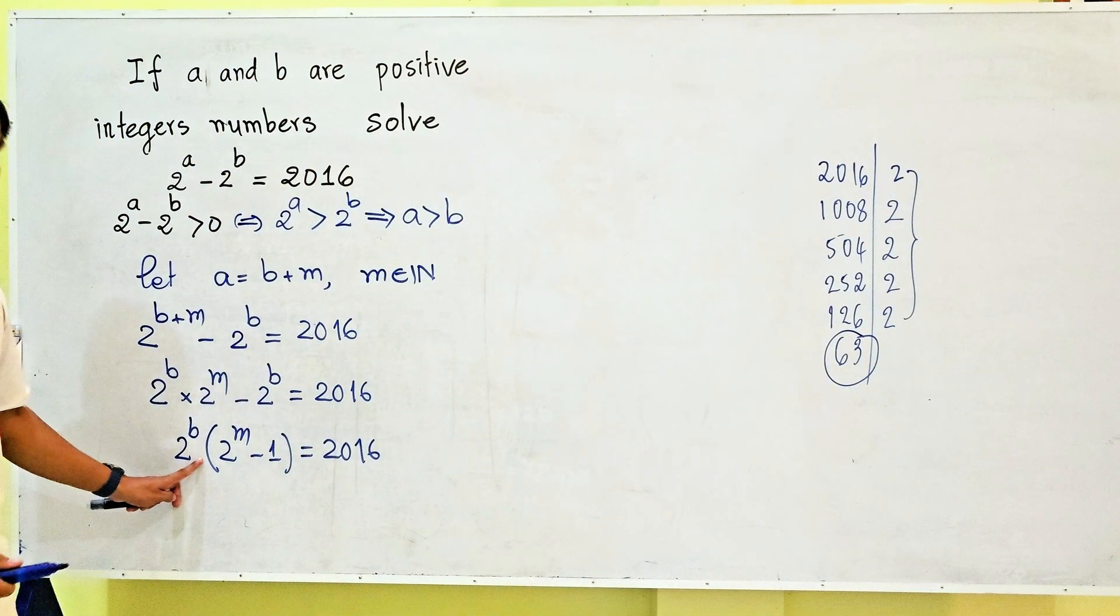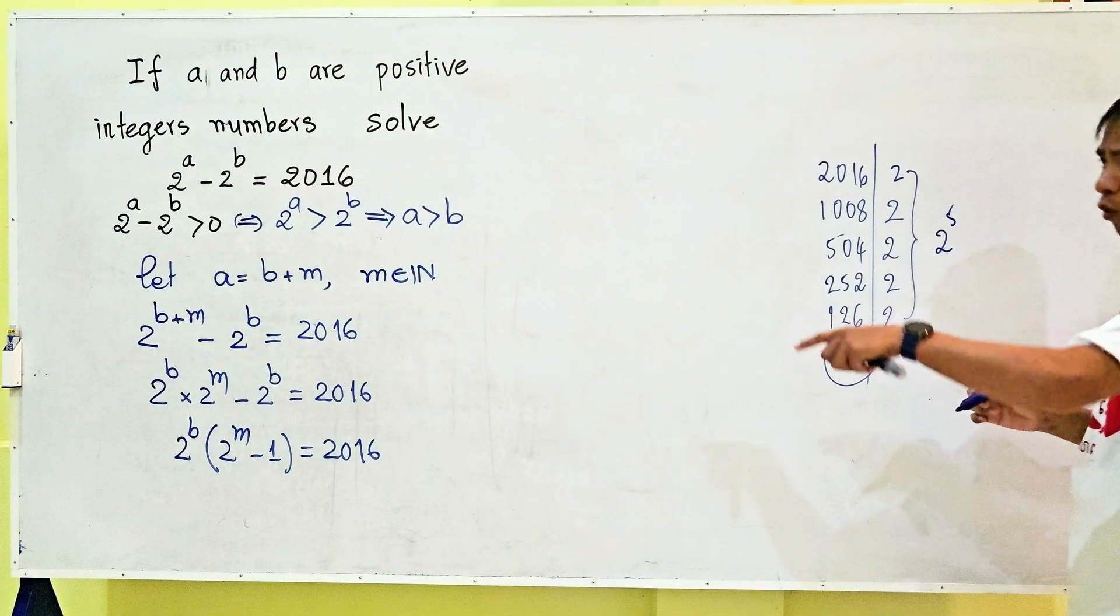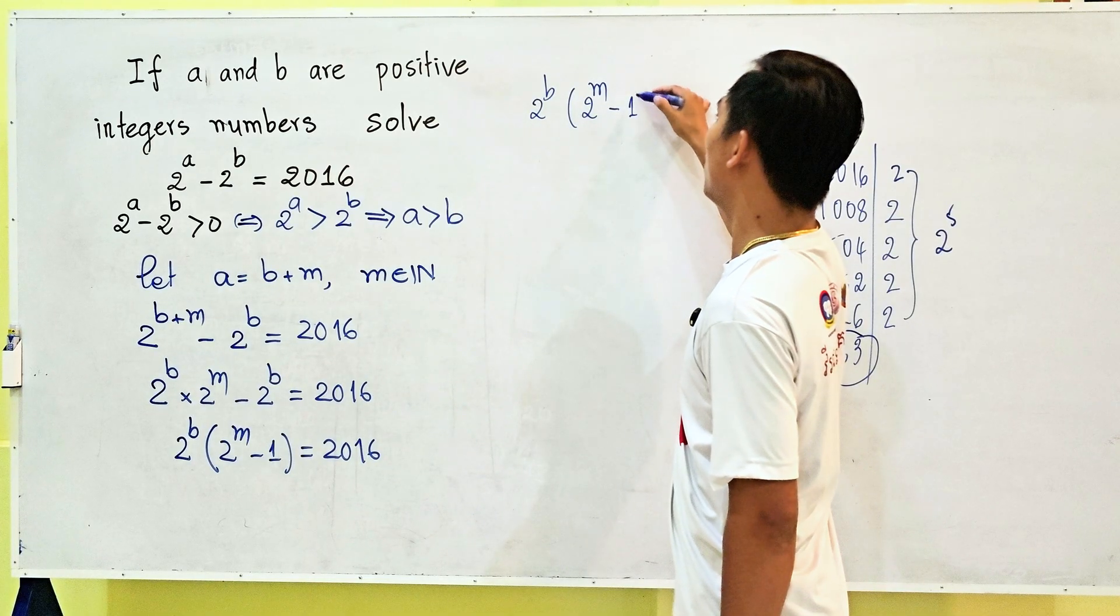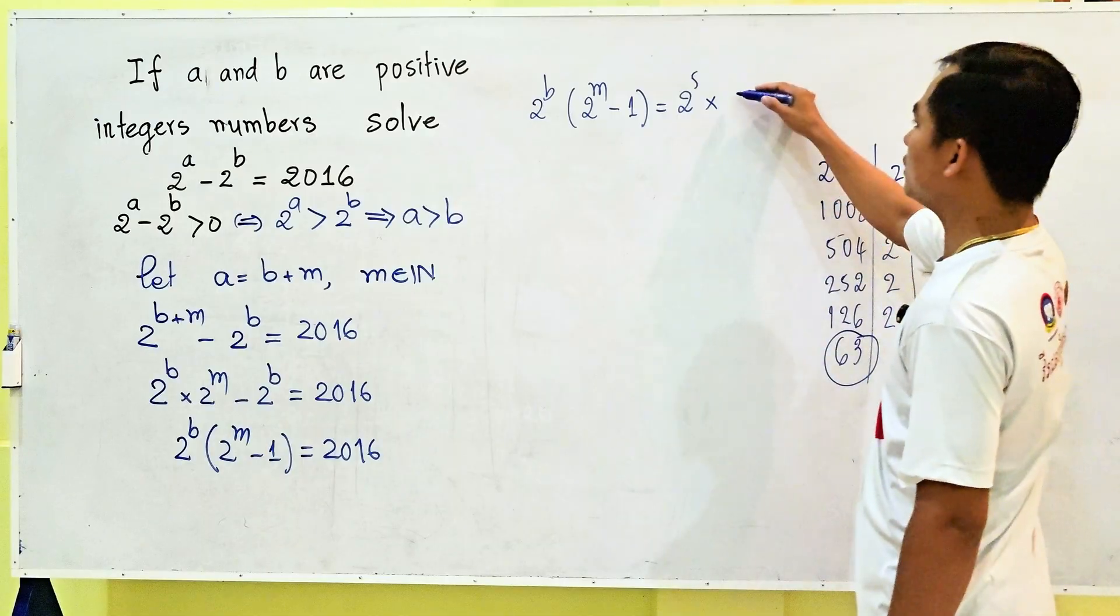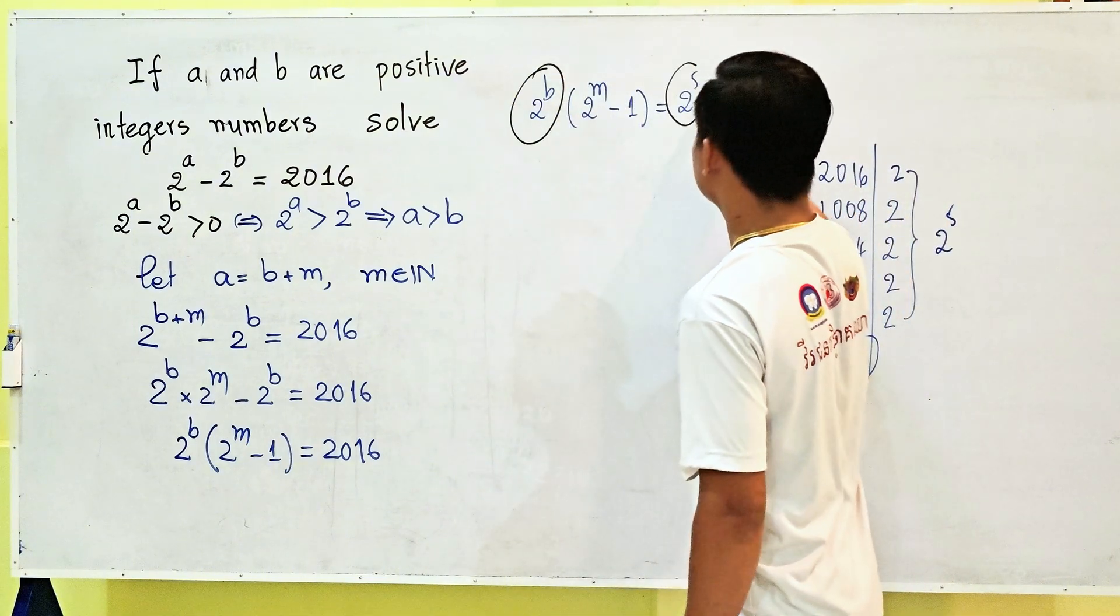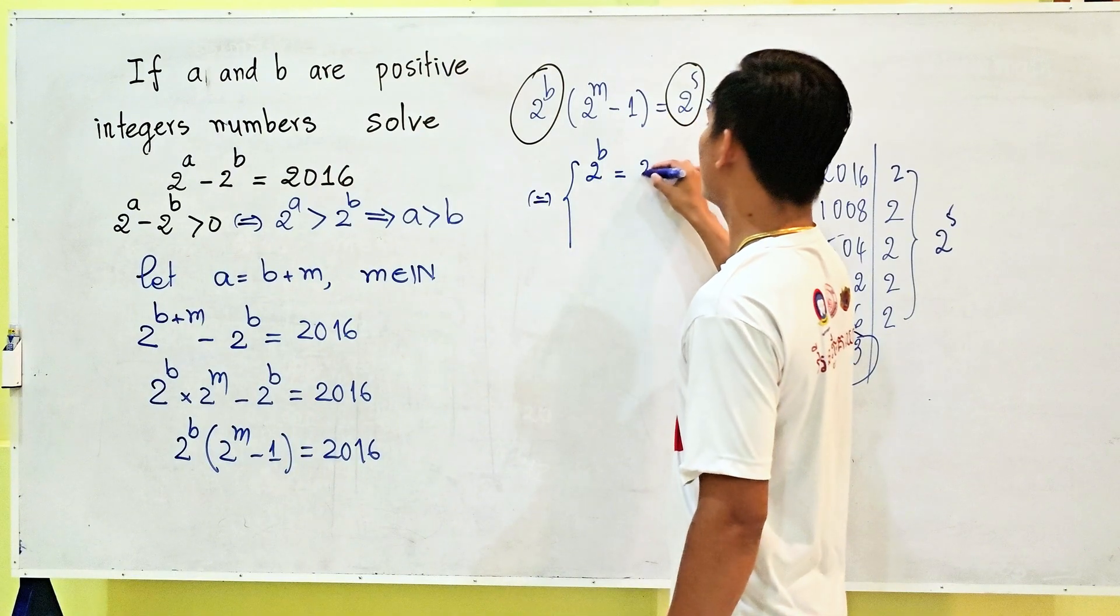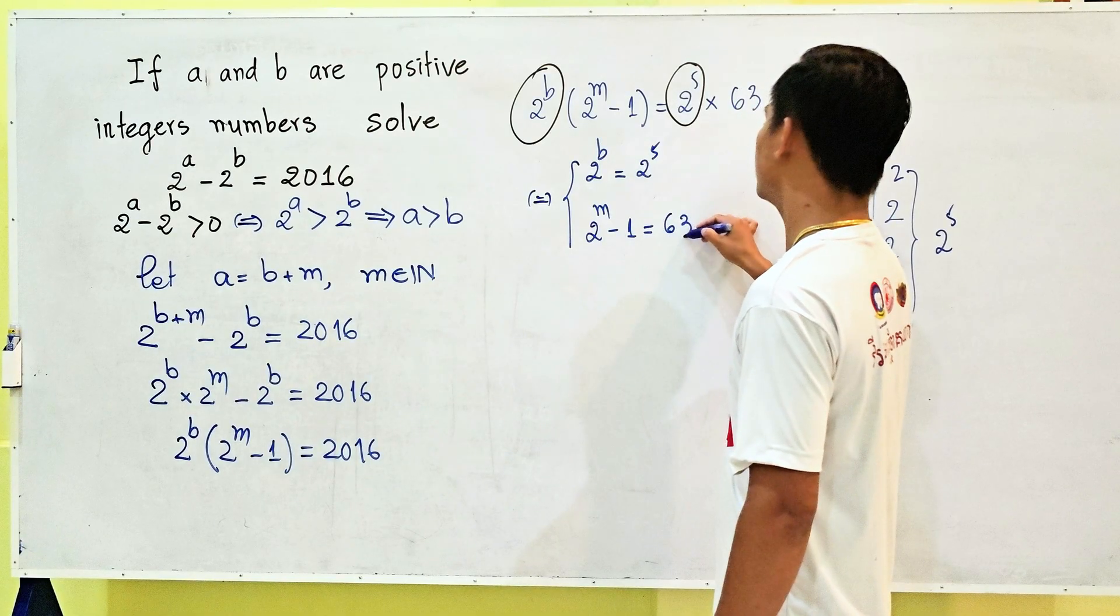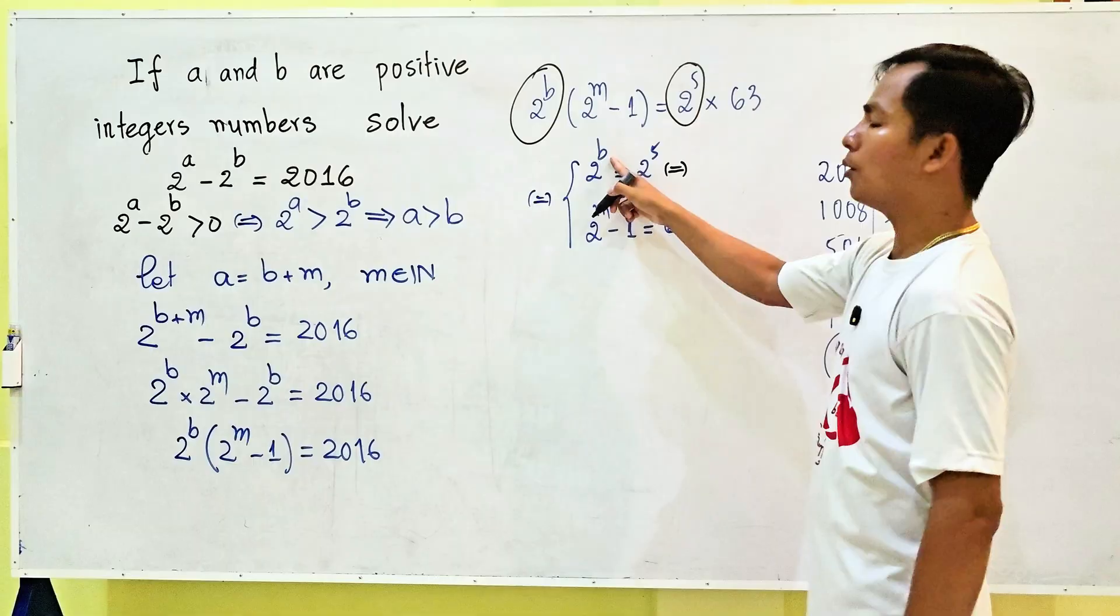So we can write 2^b(2^m - 1) = 2^5 × 63. Therefore, 2^b = 2^5 and 2^m - 1 = 63. From the first equation, we get b = 5.